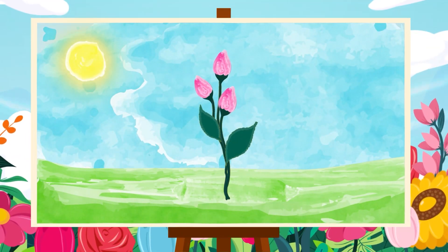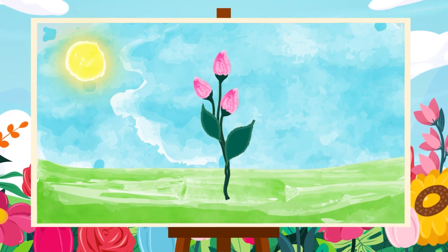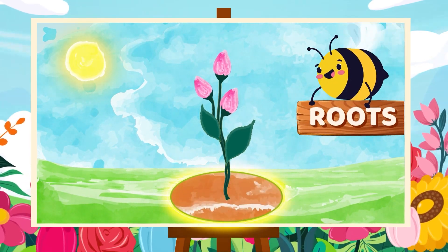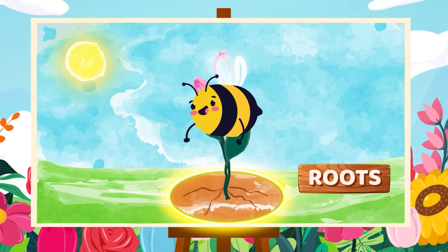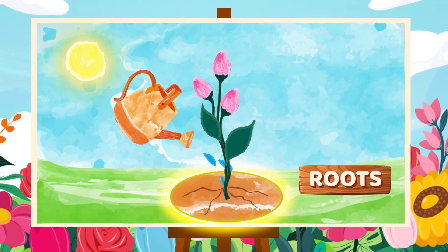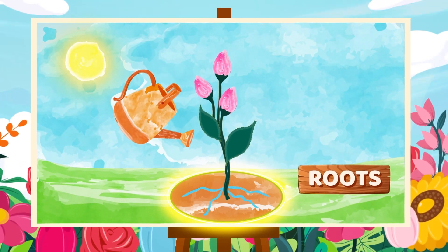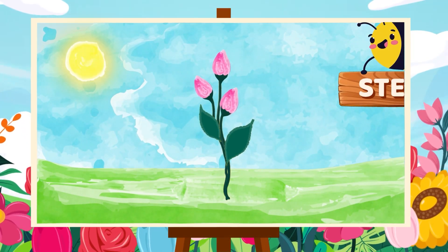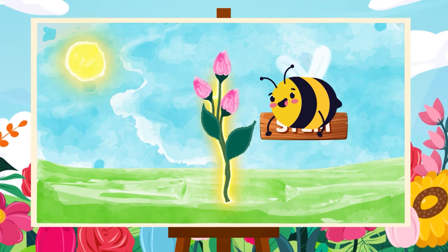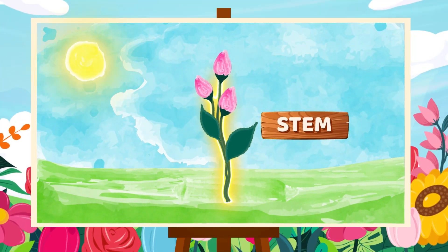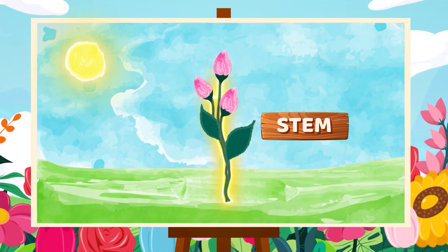This is a plant and we will name its parts one by one. These are the roots — it helps absorb water and minerals from the soil. Next, this is the stem. It holds the plant upright and distributes the water and minerals to the leaves and flowers.